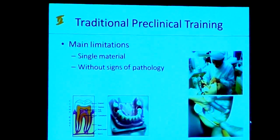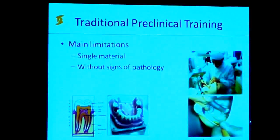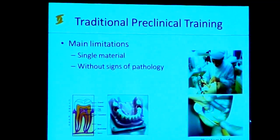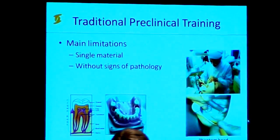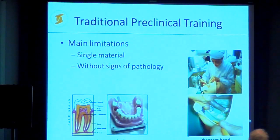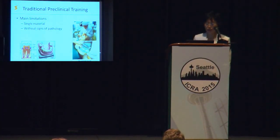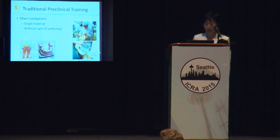In traditional pre-clinical training, phantom heads are used as a physical simulation tool. They are equipped with real surgical tools and provide students with an environment similar to actual surgery settings. However, the teeth models used in phantoms are plastic, which results in several limitations. For example, the tooth structure is very complicated — it consists of different materials with different stiffness — but plastic teeth can only represent a single material. Furthermore, plastic teeth cannot exhibit signs of pathology, so working on plastic teeth is quite different from treating a real patient. Progressing to a real patient is quite a big step.